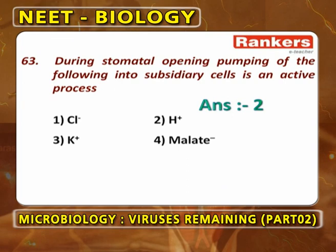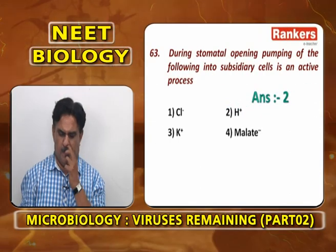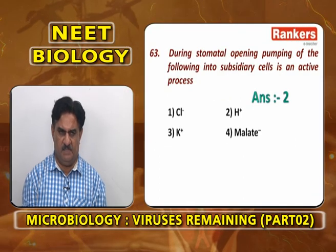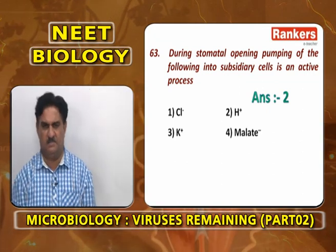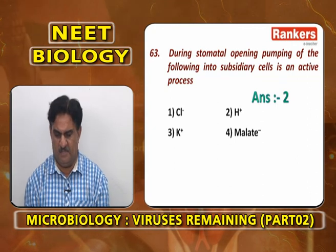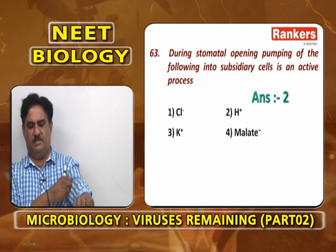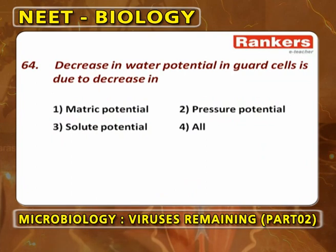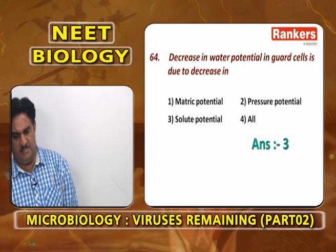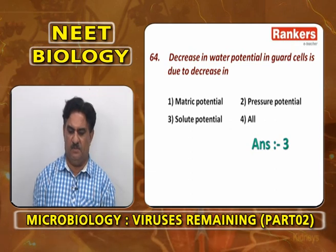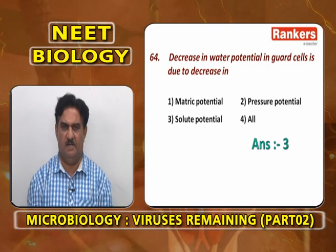During stomatal opening, pumping into subsidiary cells by active method: entry of Cl⁻ is passive without metabolic energy; entry and removal of K⁺ from guard cells is passive; malate ions come out as malic acid without metabolic energy. The ion which is actively pumped during stomatal opening is H⁺ — pumped out by active method utilizing ATP. Second option. Decrease in water potential in guard cells is due to solute potential — solute potential increases and water potential decreases.